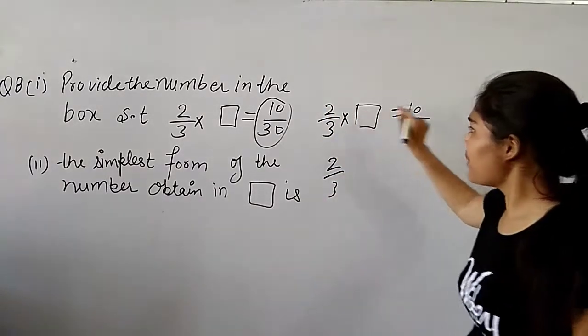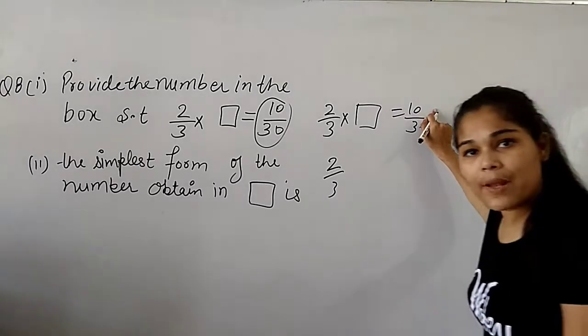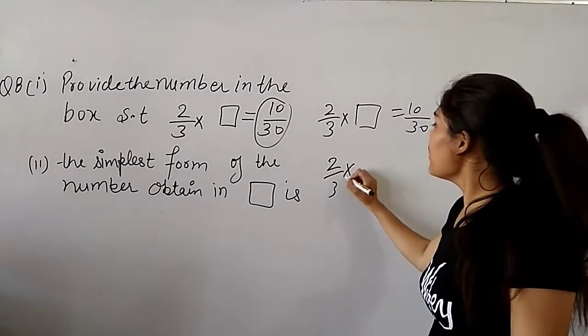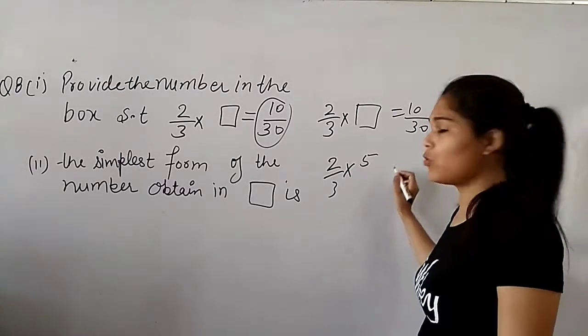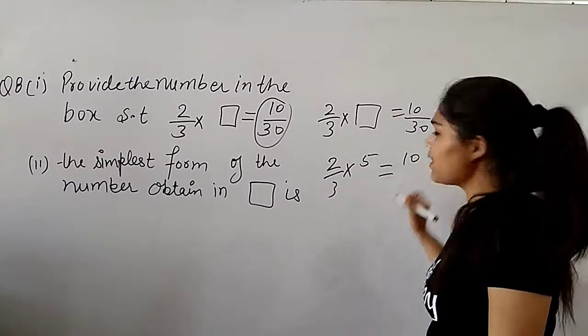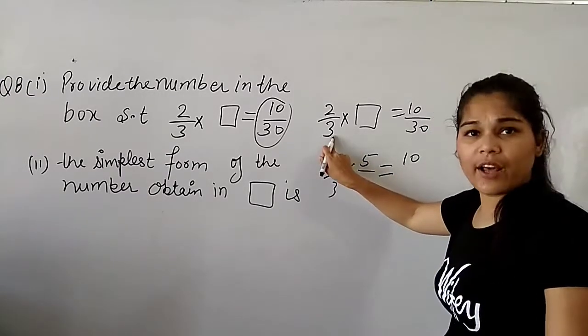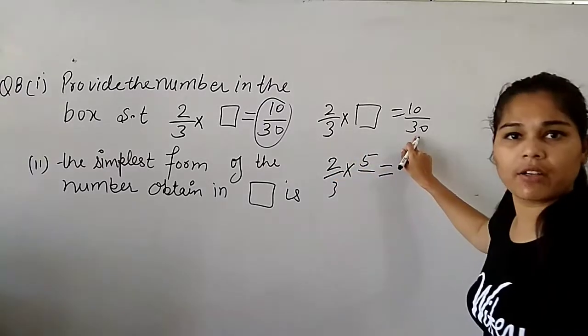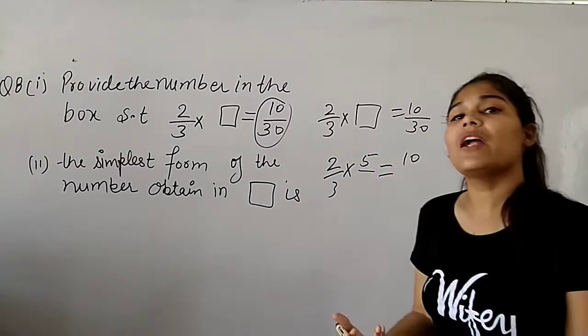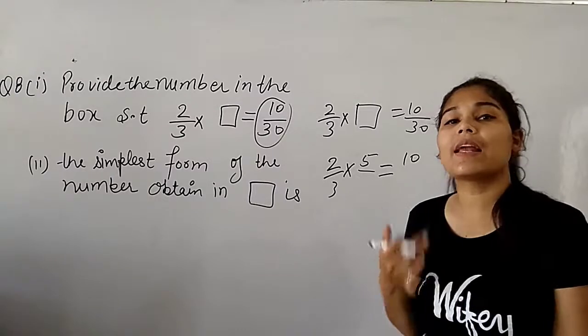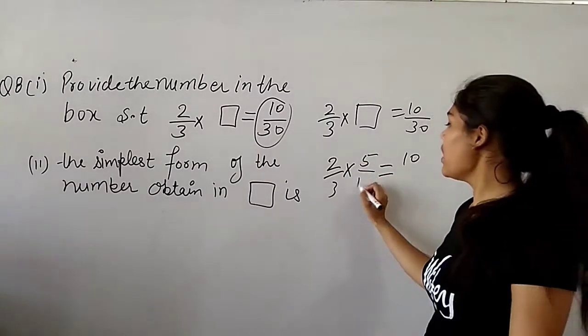Now, I will multiply 2 by 5 by 5. In the denominator we have 3 and here we have 30. If you multiply 3 by 5, then you get 30. So, the answer is 10.